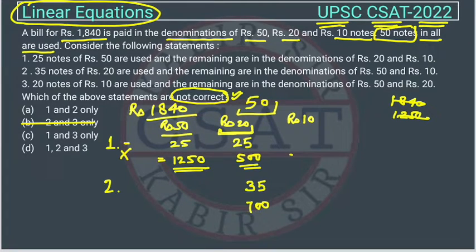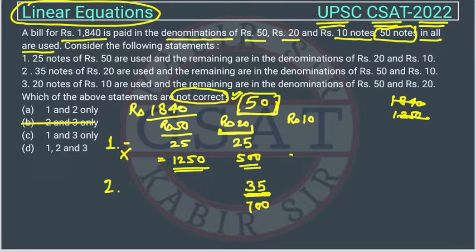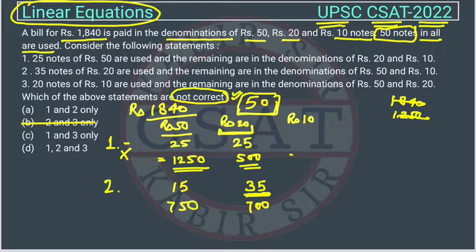In the second case, 35 notes of rupee 20 are used and the remaining are in denominations of 50 and 10. After using 35 notes, only 15 notes remain from the total of 50. Allotting all 15 to rupee 50 gives 15 into 50 equals 750. Total is 700 plus 750 equals 1450 rupees, which is not 1840. So this case is also not possible.